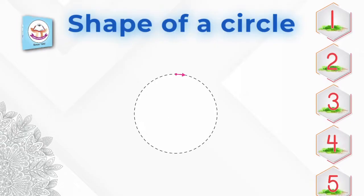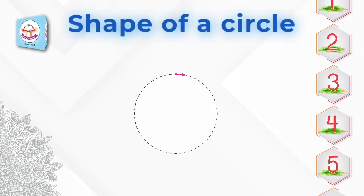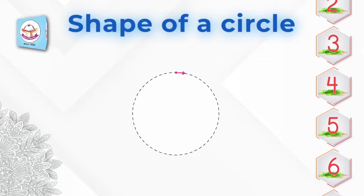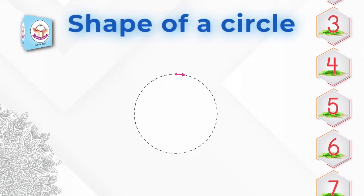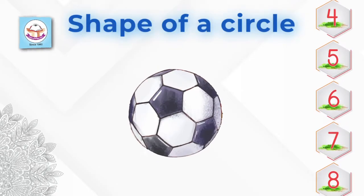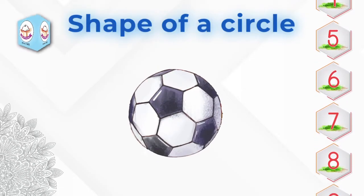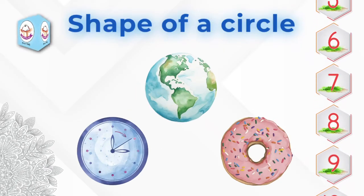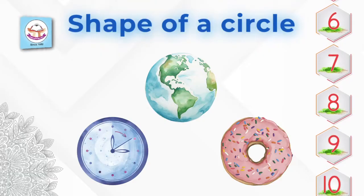A circle is a shape that is round. A circle looks like a football. The shape of a football is circle. These objects look like circles.